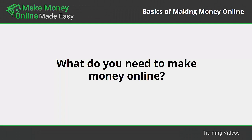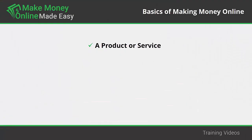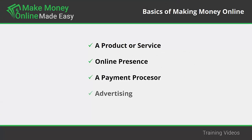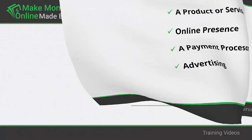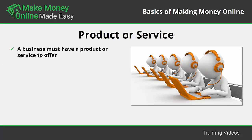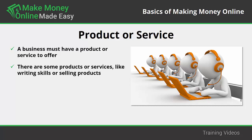What do you need to make money online? To make things simple, there are four different things you need to have ready: a product or service, online presence, a payment processor, and advertising. A business must have a product or service to offer — what the product or service will be is very important, so take some time to choose wisely. Some products or services, like writing skills or selling products, are more easily marketable over the internet than others.